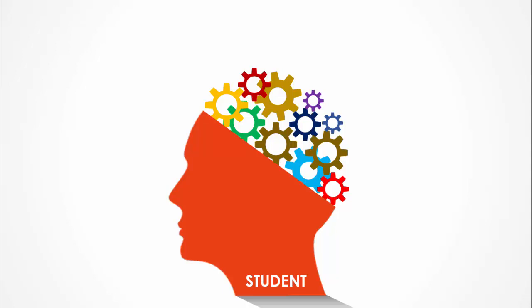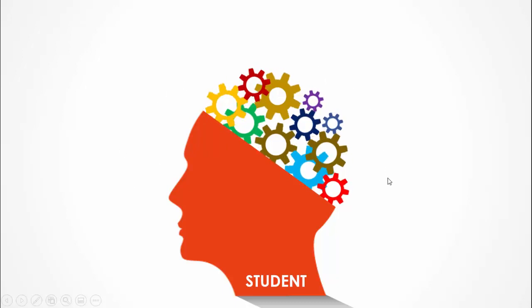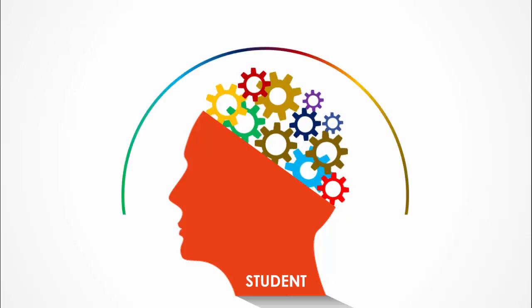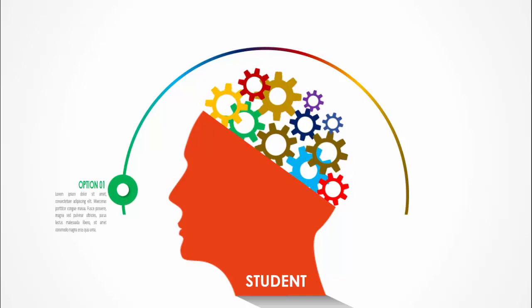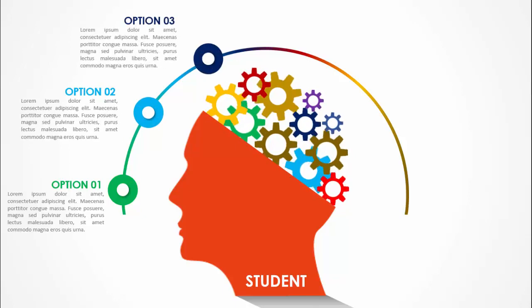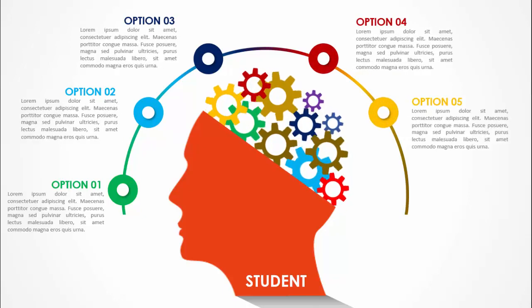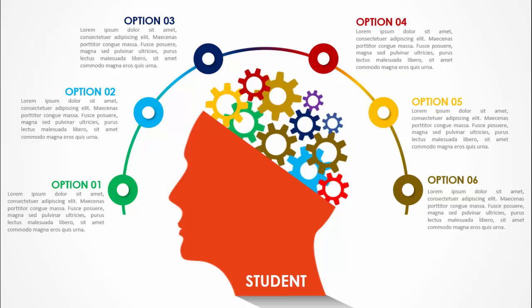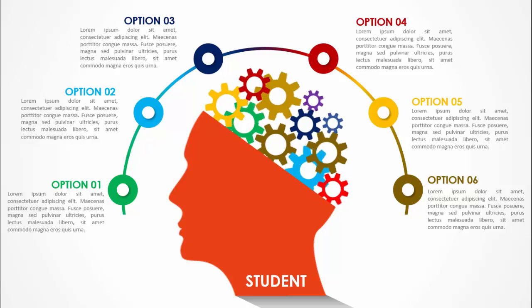In today's tutorial I'm going to show you how to create a six brain gear options infographic slide in PowerPoint. I have created this silhouette design with gears like a brain. When I click, the gear will start spinning and then the six options will appear — a semicircle comes in and then option one through six appear. This is a very beneficial slide for school students as well as working professionals.